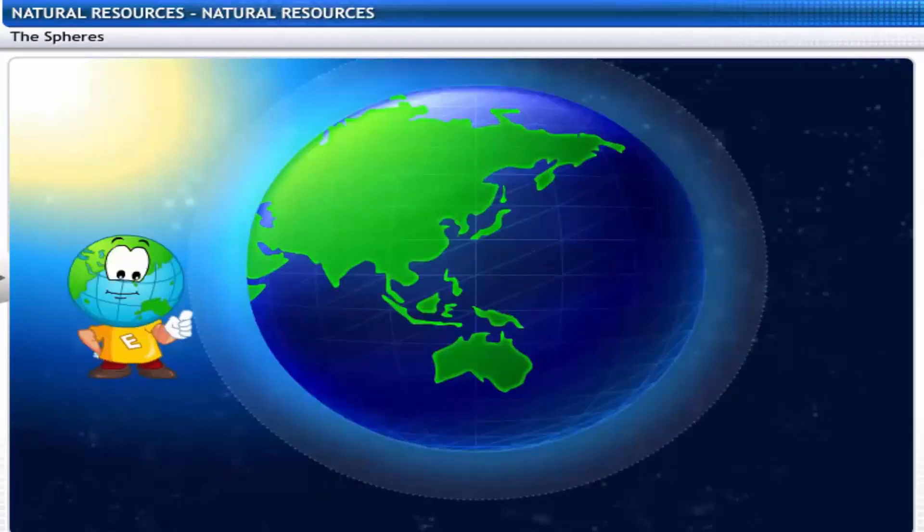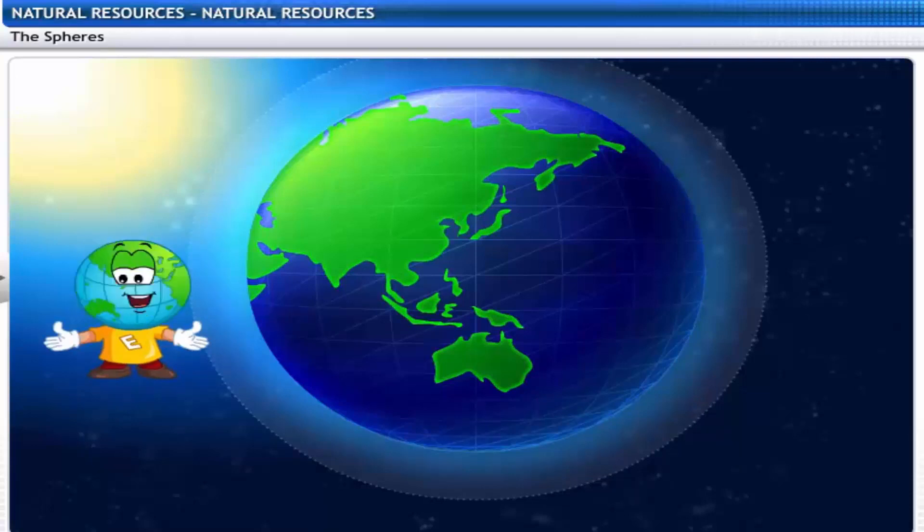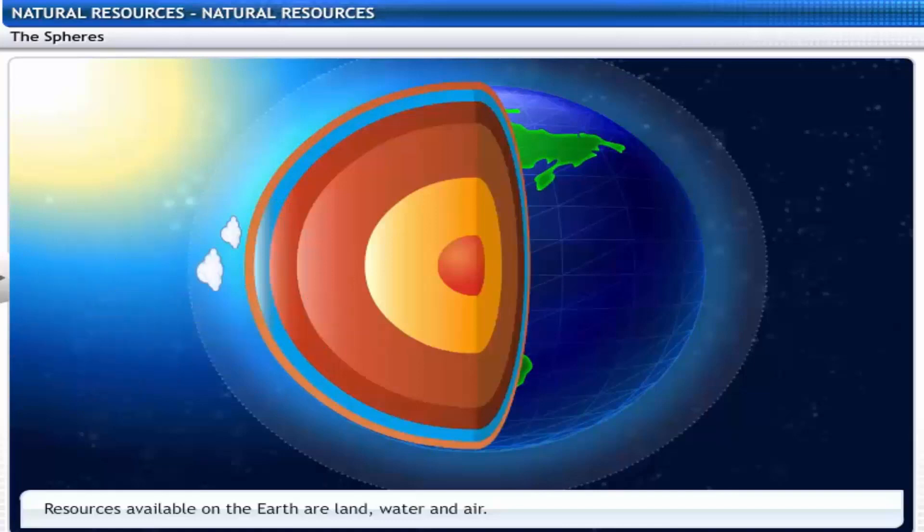Do you know the three important natural resources of Earth? I don't! So let's find out! The resources available on Earth are land, water and air.